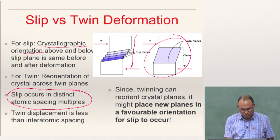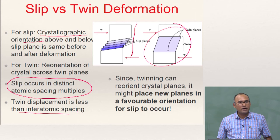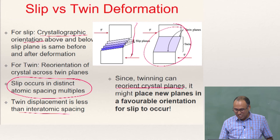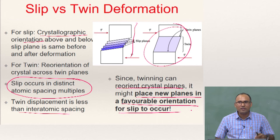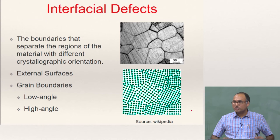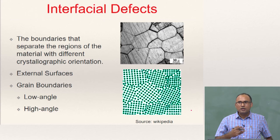The most important effect of twinning in a material is actually to reorient the crystal planes such that it places new planes in a favorable orientation for slip, in the way that we have discussed. That is about one-dimensional defects — line defects. Now the next kind of defects are interfacial defects.